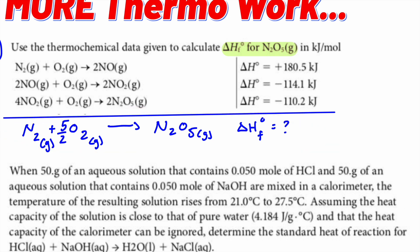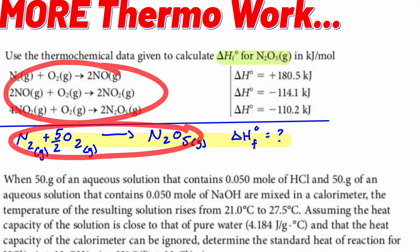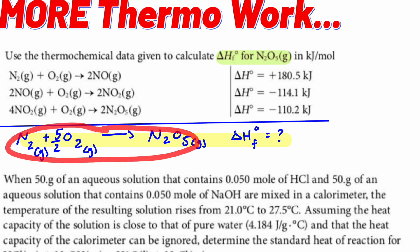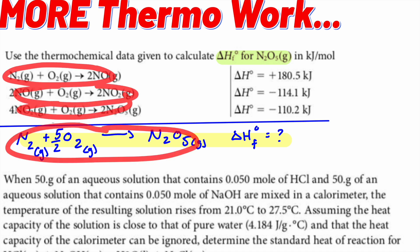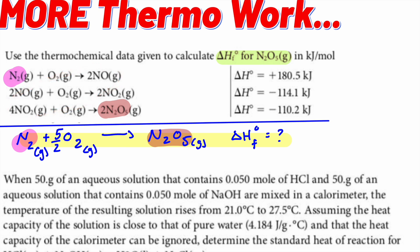My biggest suggestion is to always find species that are unique — that only show up in the final equation and in one separate equation. N₂ is here and N₂ is only in one equation. N₂O₅ is here and only there. Everything else will cancel out or add up in some way.